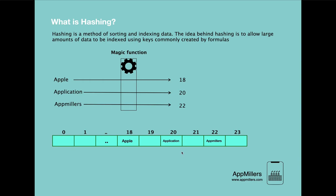Now the question is: if we want to read data from this array, how do we access it? The logic is the same. For example, if we want to access apple, we use the magic function to convert apple to a number — and every time we convert the same string the result will be the same — so we get 18. Based on index 18 we can access this element. Accessing an element of an array by index takes O(1) time complexity, which is why hashing is very important for searching.